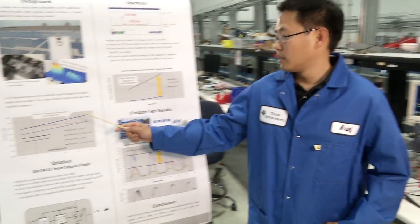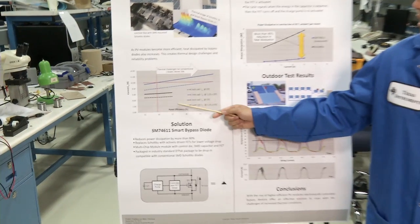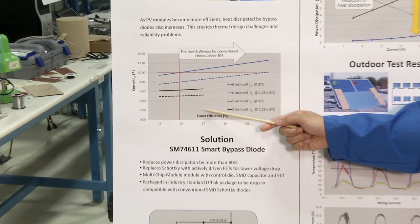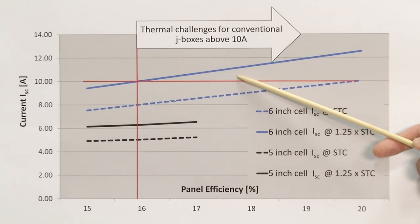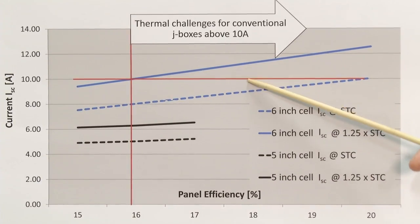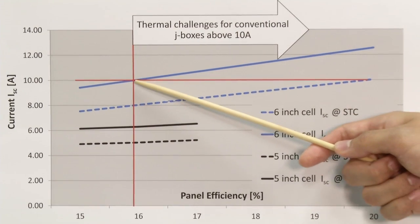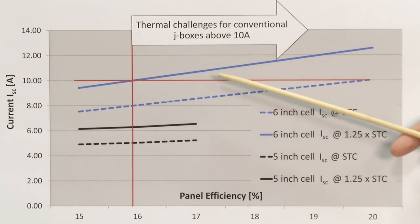A bypass diode is a critical component in PV panels. It is used to mitigate the hot spot that happens on PV panels when the panels are shaded. Normally these bypass diodes are Schottky diodes. As you can see here, when the panel efficiency increases, the current that the panel is able to produce also increases. This will create thermal challenges for Schottky diodes, and at around 10 amps, the power dissipated on the Schottky diodes will be reaching about 4 watts.